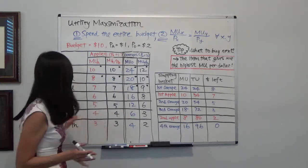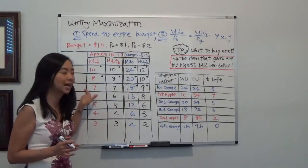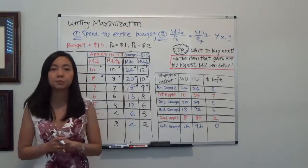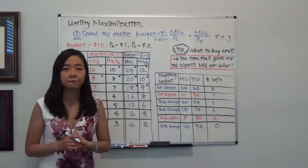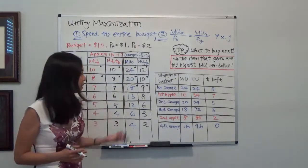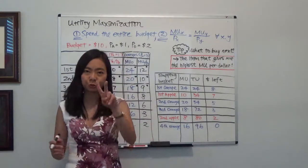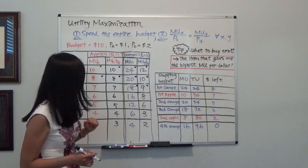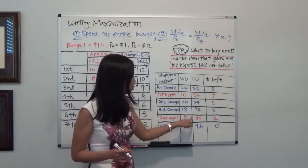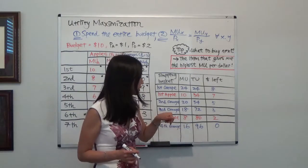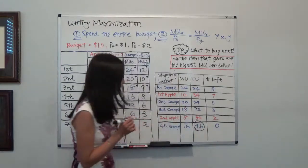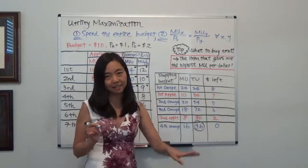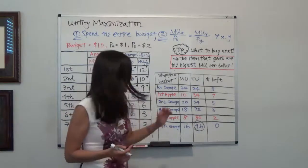Next, I choose the fourth orange over the third apple because the fourth orange gives a marginal utility per dollar of 8, which is higher than the third apple's. The orange costs $2, depleting my budget. The marginal utility of the fourth orange is 16, so my total utility is 80 + 16 = 96. I end up with four oranges and two apples, spending the whole $10. My maximized total utility is 96.